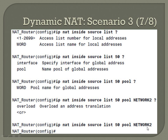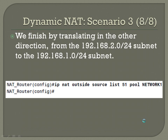We finish by translating in the other direction — from the 192.168.2.0/24 subnet to the 192.168.1.0/24 subnet. The command is almost the same, but change the ACL number and pool name, and note the direction changes: IP NAT outside source list 51 pool NETWORK1. The inside/outside designation changes since we're going in the opposite direction.